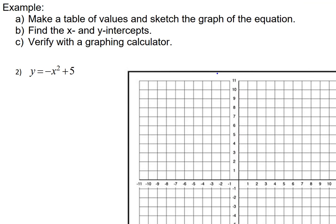In our next example, we'll take a look at how we can now by hand interact with a coordinate plane graph. And this problem, this example, has a few parts. Part A says make a table of values and sketch the graph of the equation. Part B says find the x and y intercepts. And part C says verify with a graphing calculator. So we'll attempt to go through each of these parts one at a time.